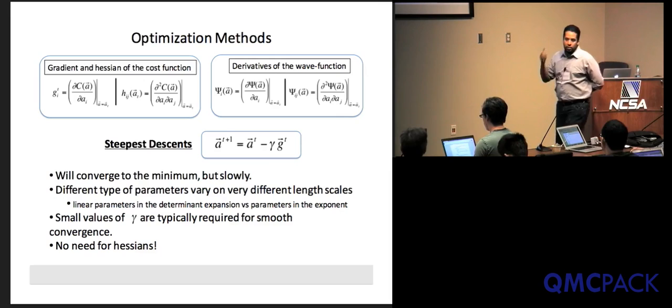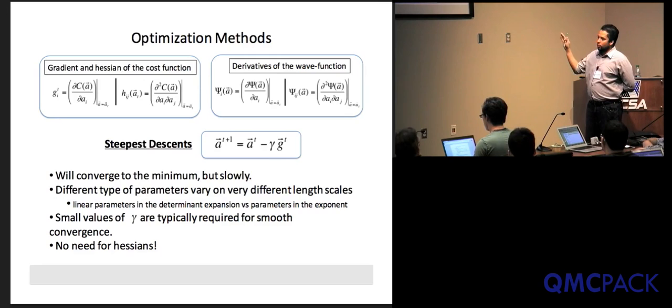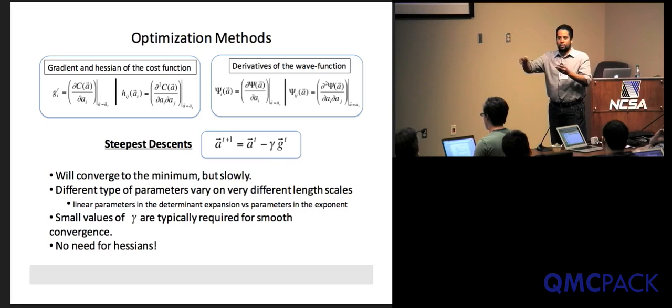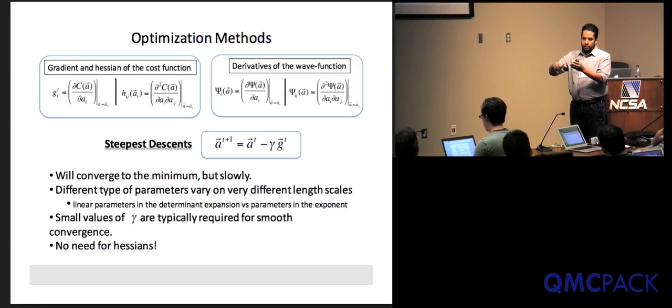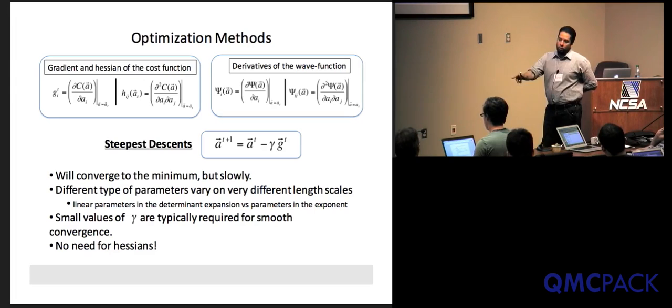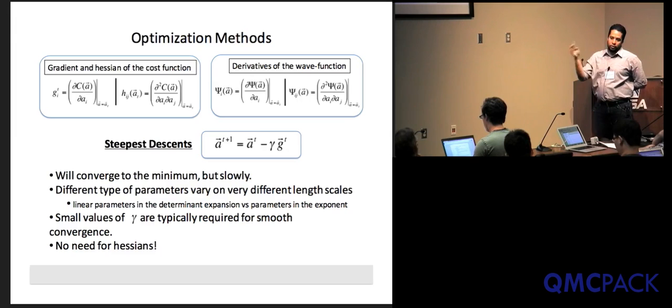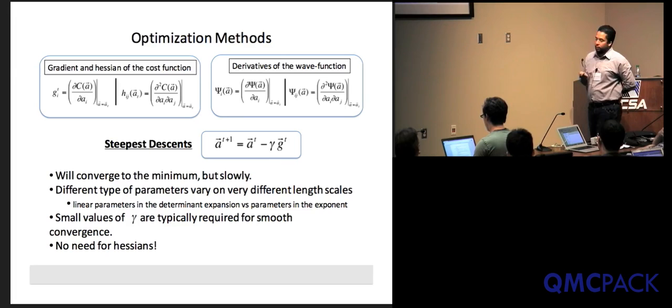The problem with steepest descent is that it's typically very slowly convergent. If you have a narrow valley where the function is not steep in one direction but very steep in the orthogonal direction, steepest descent oscillates on the steep direction rather than walking along the slow-decreasing direction. The benefit is that you don't need Hessians — no second derivatives, which can be tricky to evaluate.